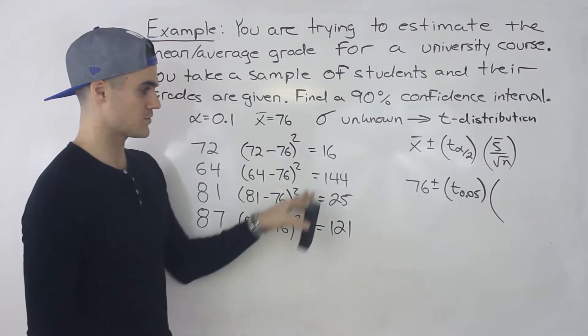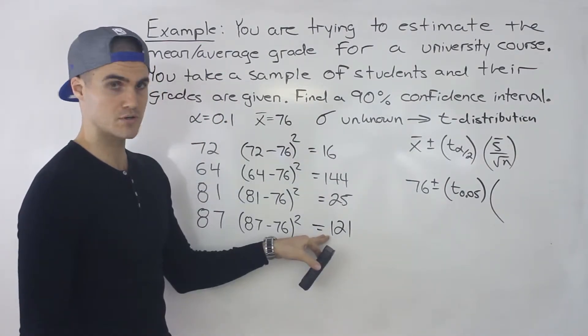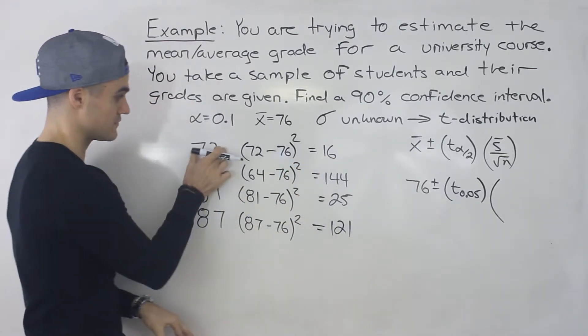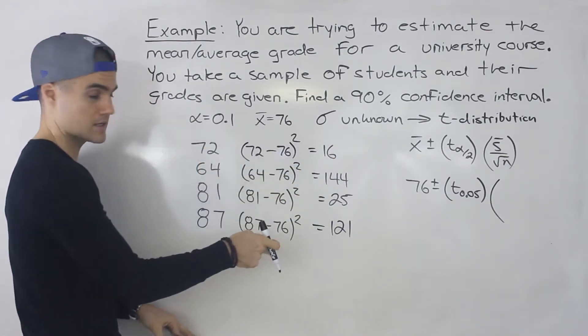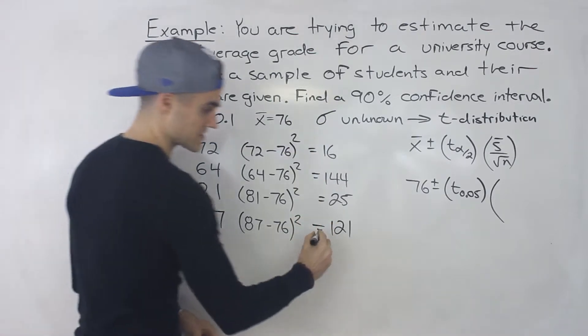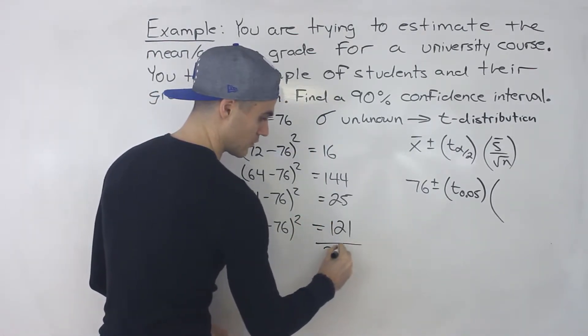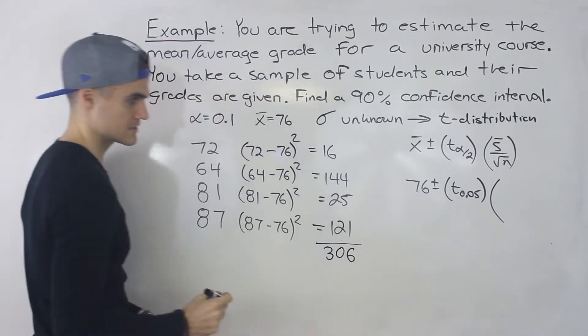And then what you do is you take these numbers. These are called the squared deviations, right? The deviations from the mean. Square them. You have to sum these up. So you'd end up getting 306.